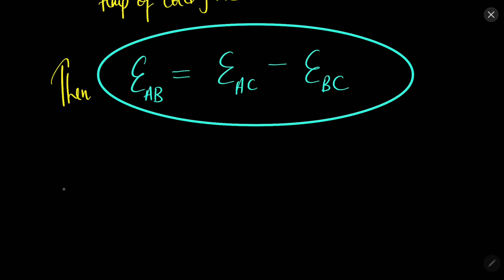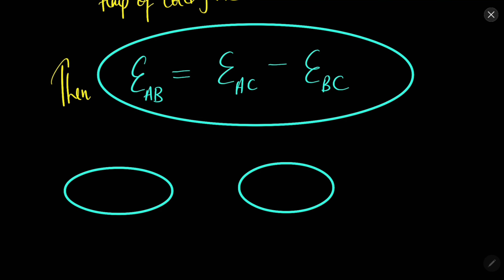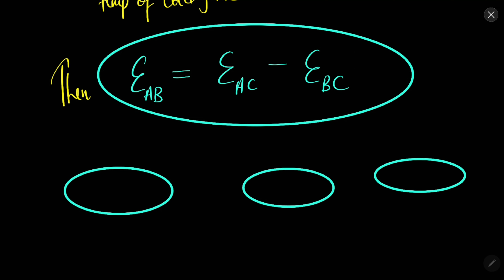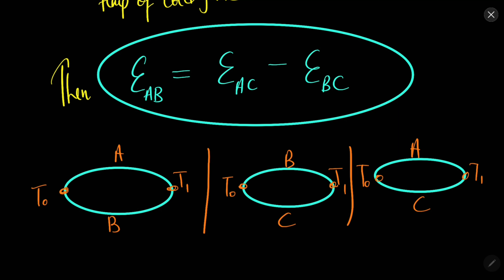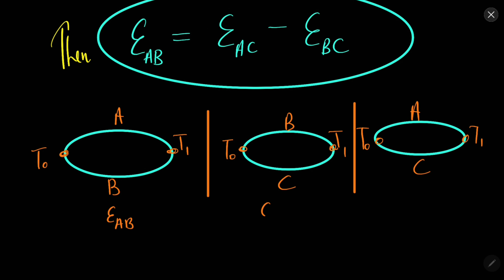Let us draw a diagram to understand the situation. We have three combinations: A and B, B and C, and A and C. The temperature at one side is T0 in all three cases, and the temperature of the colder part is T1 in all three cases. If this is the case, then the EMF of one combination equals the difference of the EMFs of the other two.